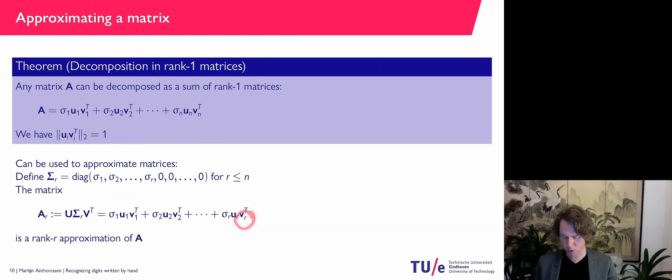If we take them all, then r is going to be equal to n. But typically we want to choose r smaller than n. So we only want to use a couple of these rank 1 matrices.